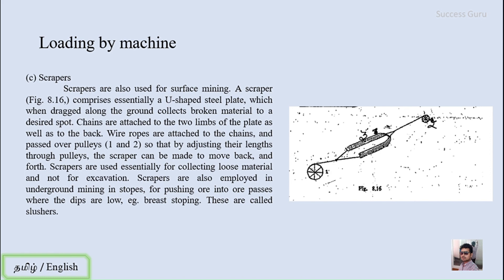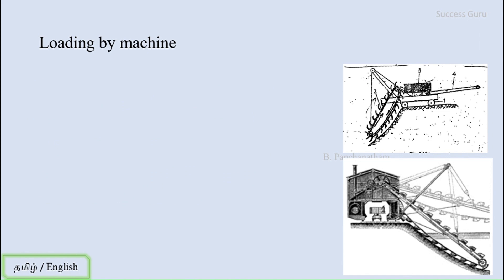Scrapers are also employed in underground mining in stopes for pushing ore into the ore pass where the dip is low. In steeply dipping ore bodies, the broken ore simply slides down following the dip to the ore pass. But in gently dipping ore bodies, the material will not move on its own, so scrapers are used in underground mines. This type of scraper used underground is called a slusher. That is a general outline of scrapers.